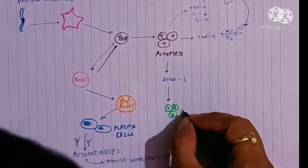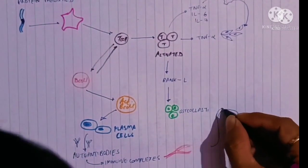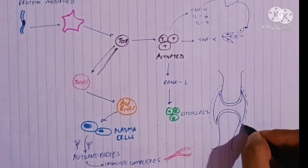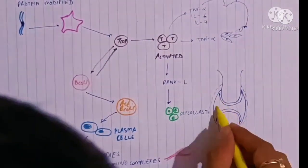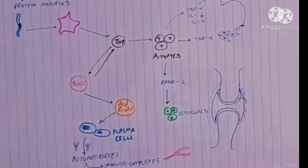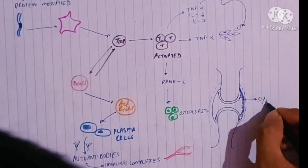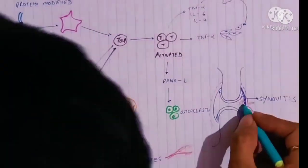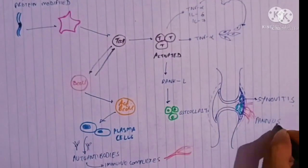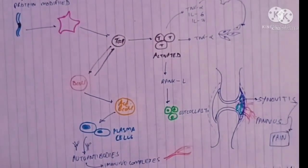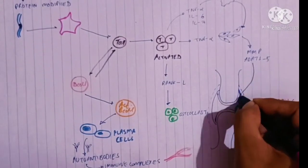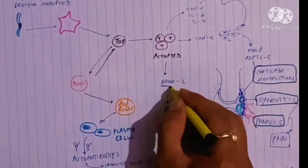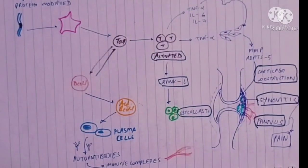T cells also activate RANK ligand, which activates osteoclasts and leads to bone resorption. In the joint, the inner part is cartilage, surrounded by synovium, with the joint capsule outermost. Inflammation of the synovium — synovitis — is the main pathology, causing pain. Blood vessels with infiltrating cells form what is called pannus. Fibroblasts activate MMPs and ADAMTS, leading to cartilage destruction. Synovitis, pannus formation, and cartilage destruction are the key features of rheumatoid arthritis.